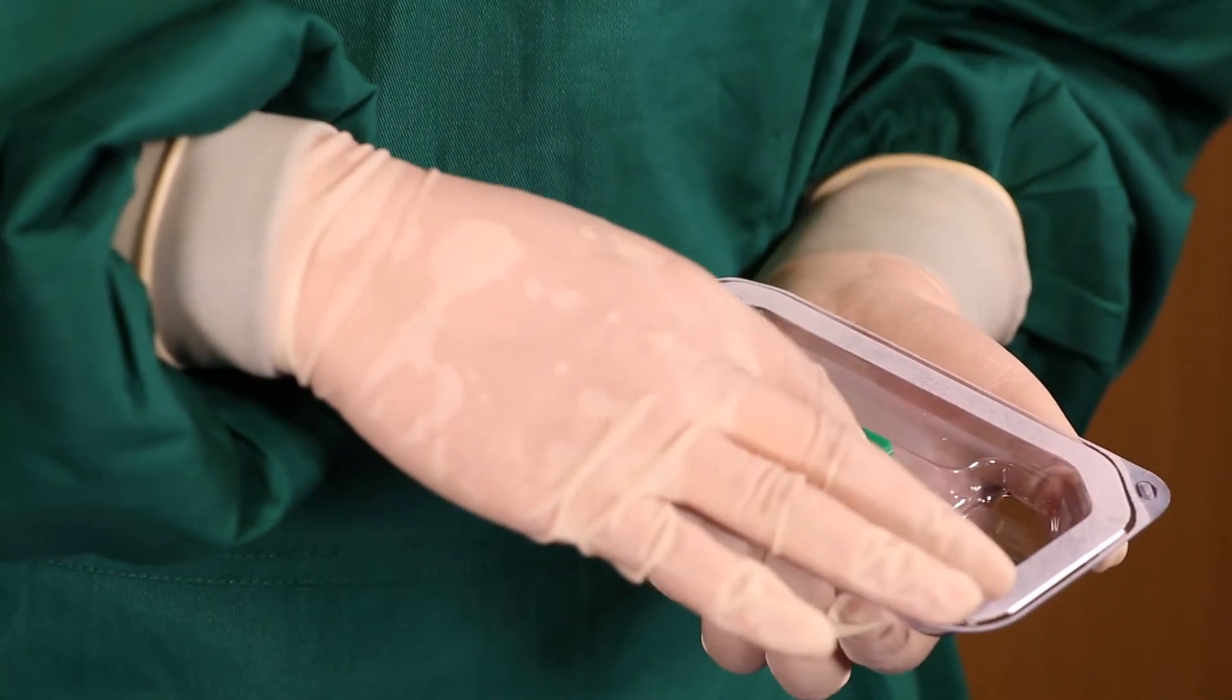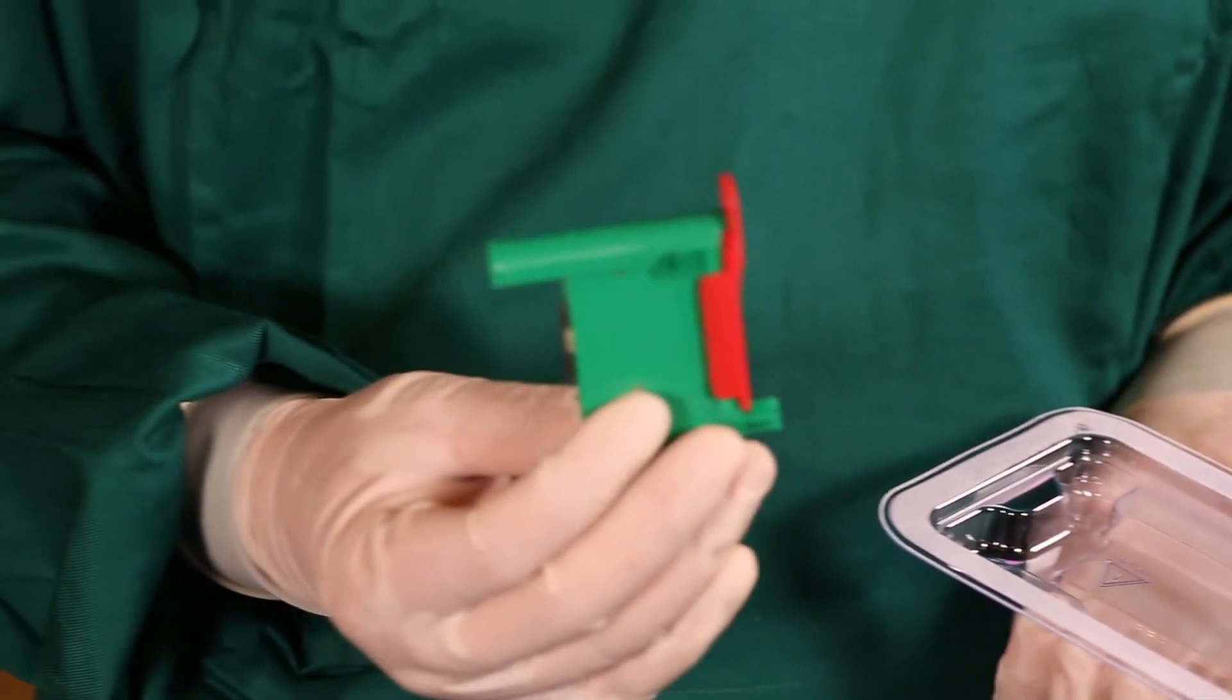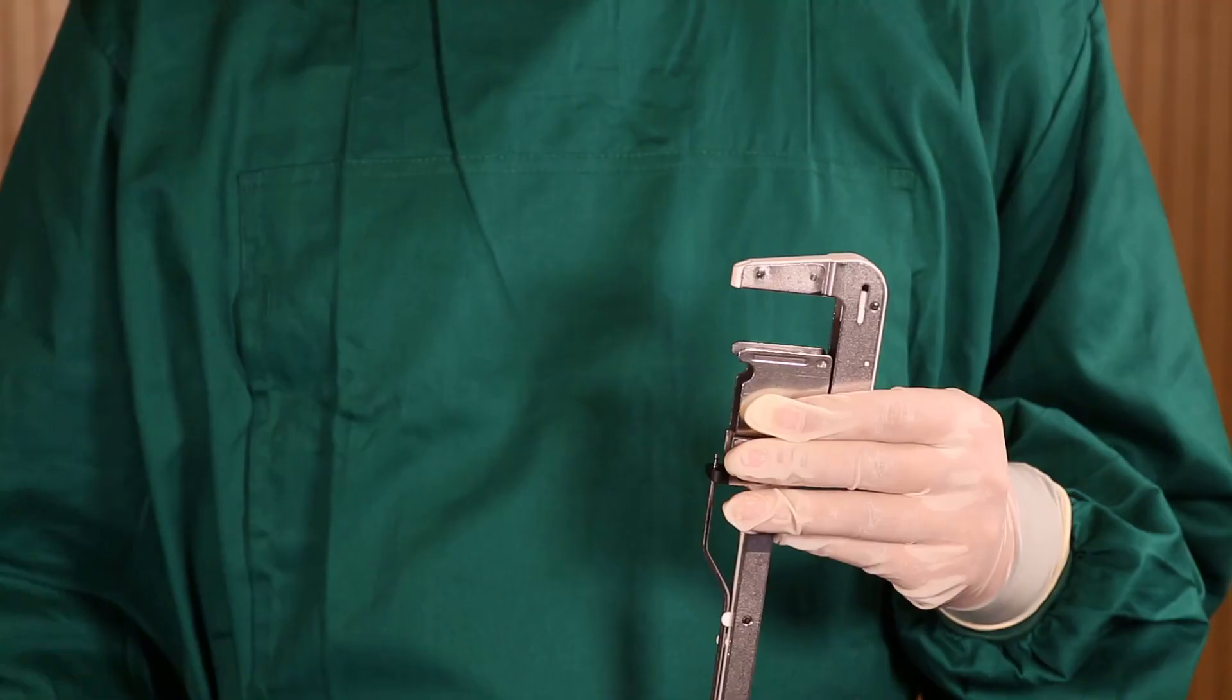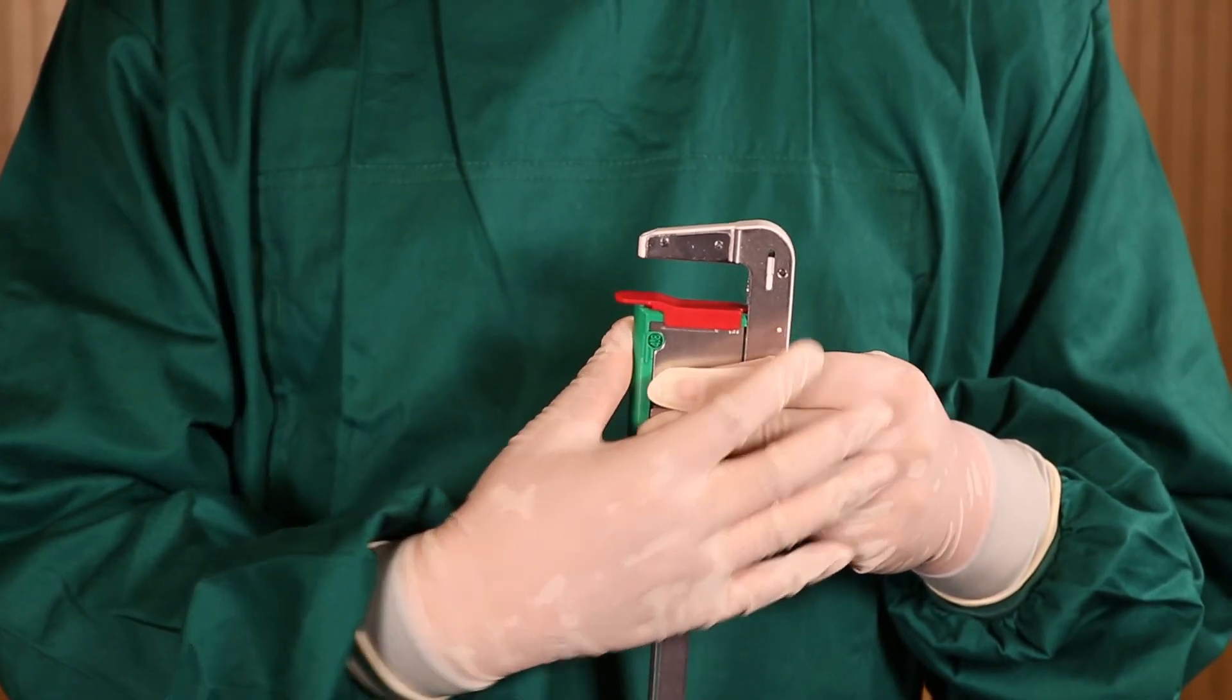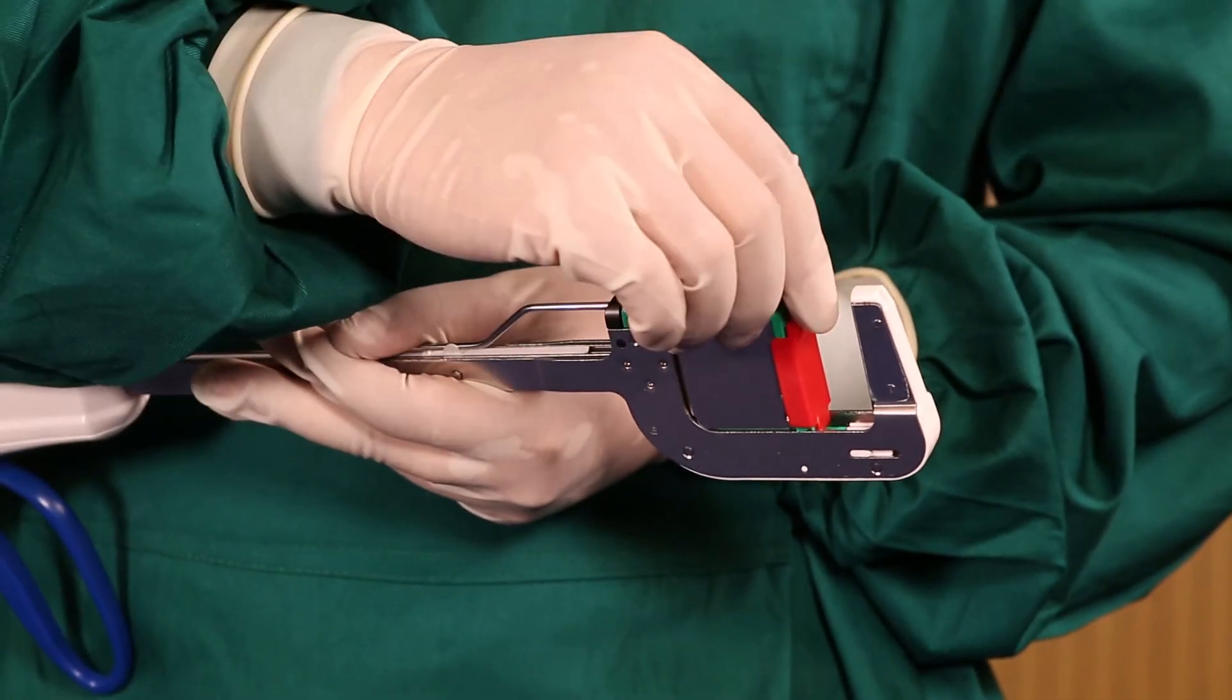To reload the instrument, make sure the RU groove is corresponding with the cartridge sliding splint. Insert the RU into the metal cartridge housing and push firmly downward. Then remove the red protector.